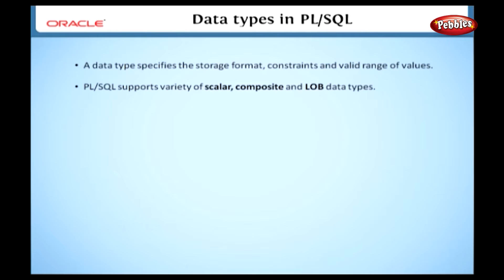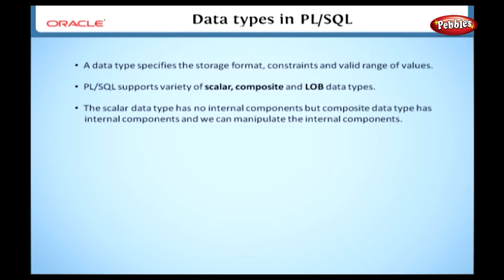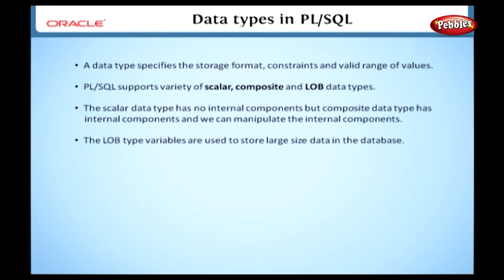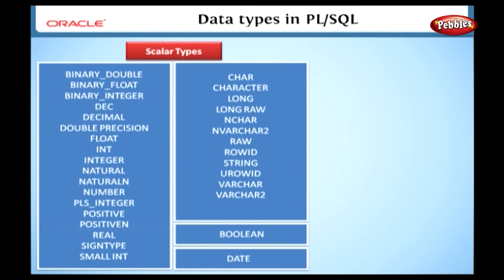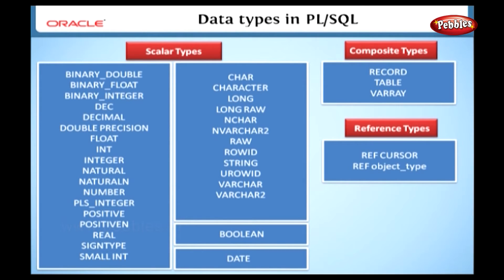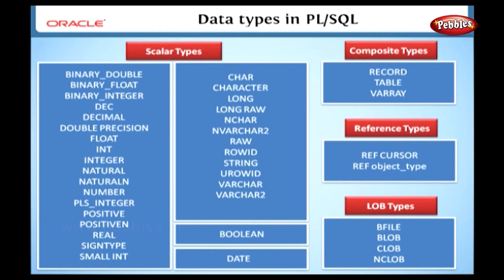PL/SQL supports a variety of scalar, composite, and LOB data types. The scalar data type has no internal components, but the composite data type has internal components and we can manipulate these internal components. The LOB type variables are used to store large size data in the database. PL/SQL supports all the data types supported by SQL. This table shows the various data types used in PL/SQL. Let's discuss some of the basic scalar data types.